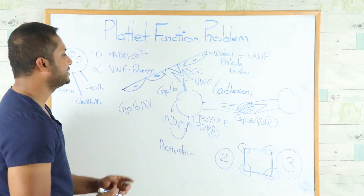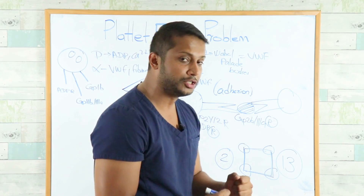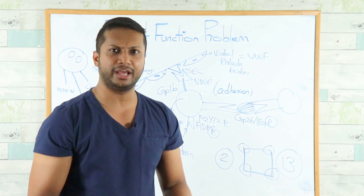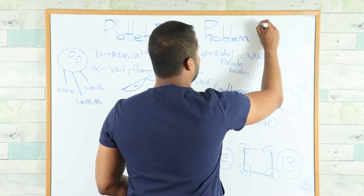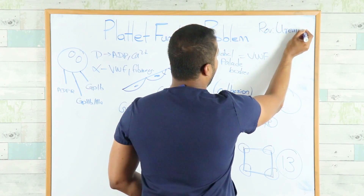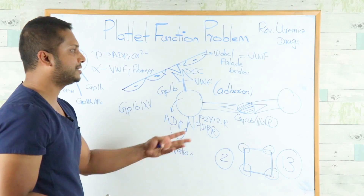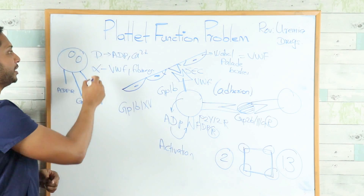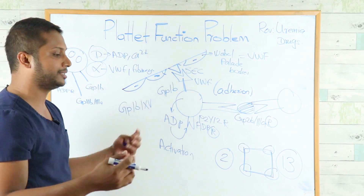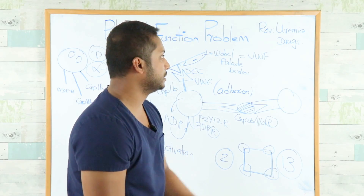Now let's address platelet function disorders. These are questioned in two ways: reversible or irreversible. Uremia is a reversible cause — it prevents degranulation of dense and alpha granules, so the platelet cannot function properly. That's a key point for the USMLE exam.